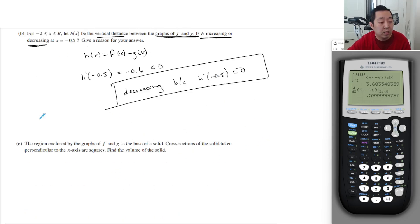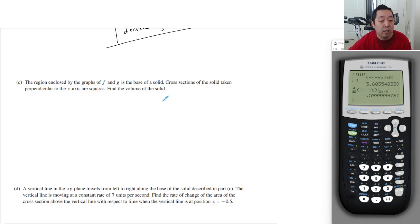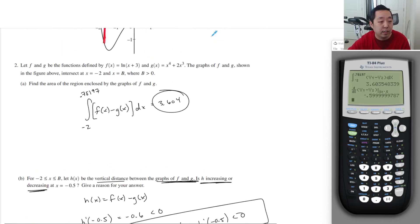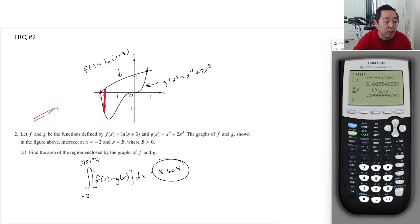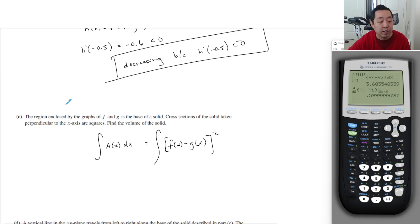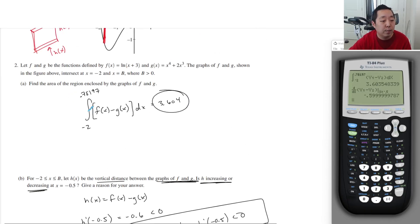The region enclosed by the graphs f and g is the base of a solid. Cross sections taken perpendicular to the x-axis are squares. Find the volume of the solid. When you're doing volumes, you're always doing the area times the thickness. In this case, the area is going to be the height of my rectangle just squared, because when I draw this rectangle, it's going to be the base of a solid here. This side is f of x minus g of x. It's going to make a kind of square shape. The area is this is h of x by h of x, right? So h of x squared. The h of x is just f of x minus g of x. Again, over the same bounds that we found in part a, which was negative 2 to 0.78197.